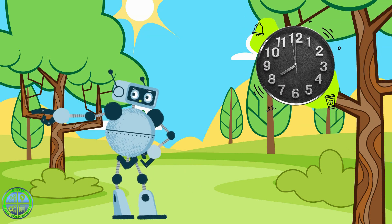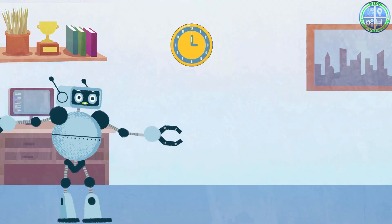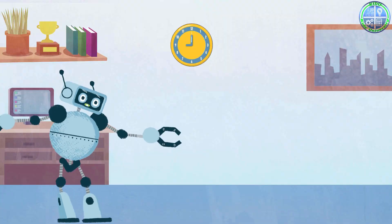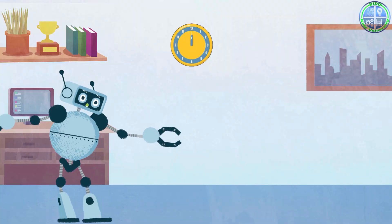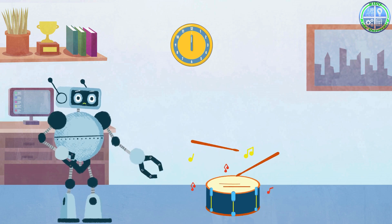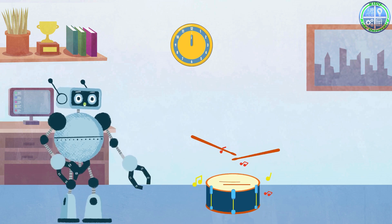Even the clock on the wall uses math. Telling time involves understanding numbers and how they go round in a circle from 1 to 12. And when you play music and count the beats, you're using math to keep the rhythm.